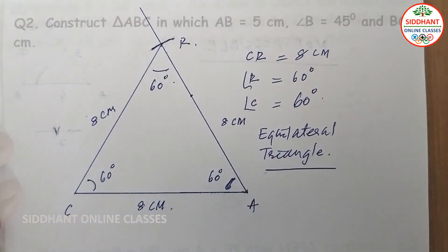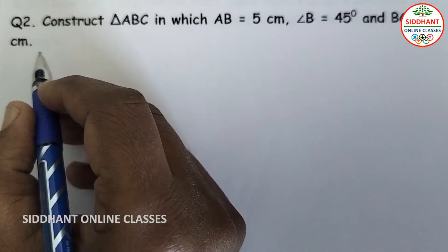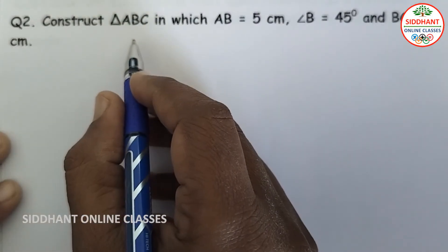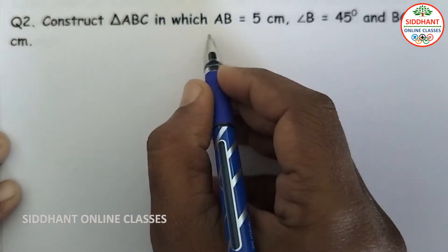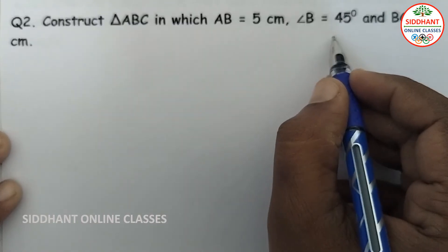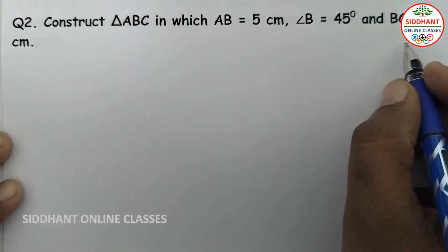So this is 8 centimeters, this is 60 degrees, this is 60 degrees — all sides are equal and all angles are equal, so we say it as an Equilateral Triangle.